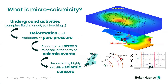First, a quick introduction about the mechanism by which micro-seismicity occurs. When there is underground activity involving pumping fluid in or out — such as geothermal, oil and gas production, or underground gas storage — the movement of fluid induces deformation or variations in pore pressure. This triggers the release of stress in the form of seismic events, small earthquakes. These are recorded by very sensitive seismic sensors — essentially geophones or seismometers — and through analysis of seismic waves we can detect micro-seismic events and determine their position and time of occurrence.